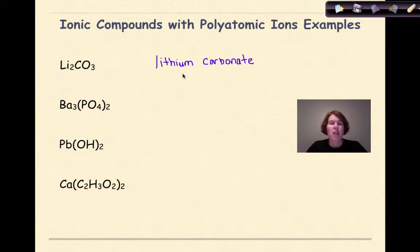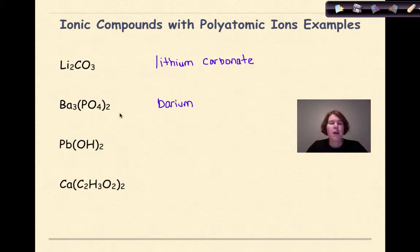Ba₃(PO₄)₂: Ba is barium — so barium. PO₄ is phosphate, so we look that up on Table E. The compound is barium phosphate.